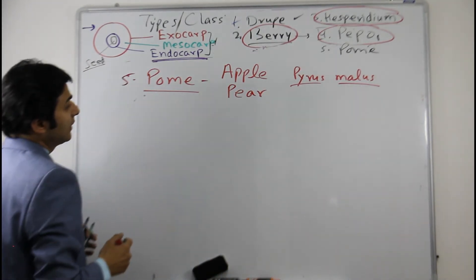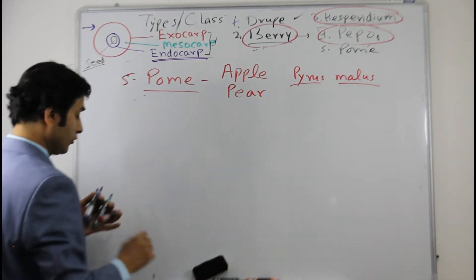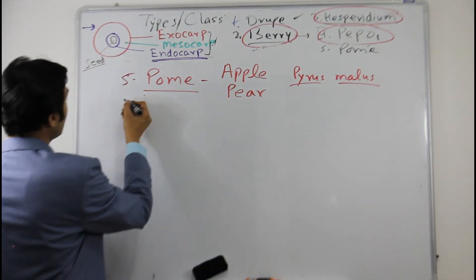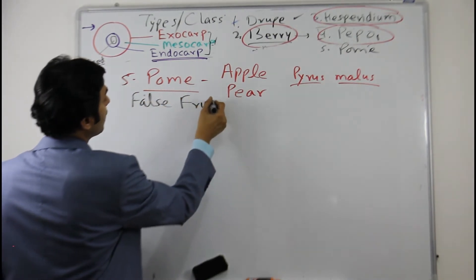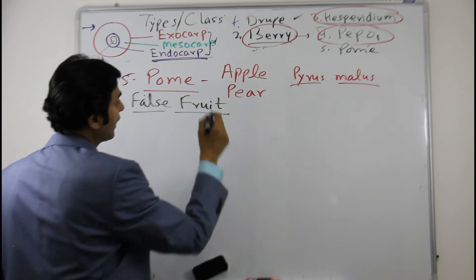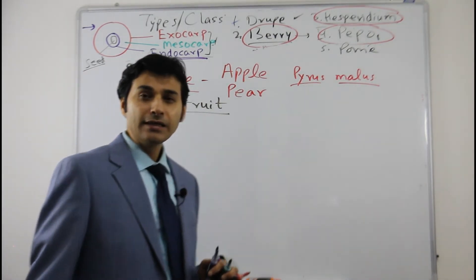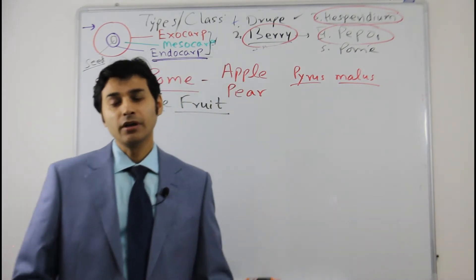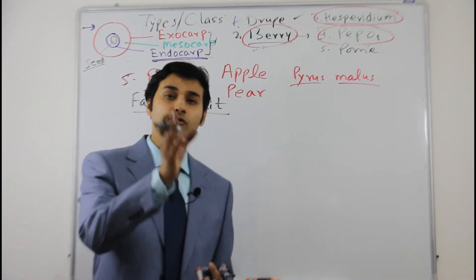Now what happens here, many times it is called as a false fruit. Now why it is called as a false fruit, you have to first understand or recall the definition of fruit. In the starting video, when we were discussing about the fruit, we said that the fruit is a ripened and fertilized ovary.